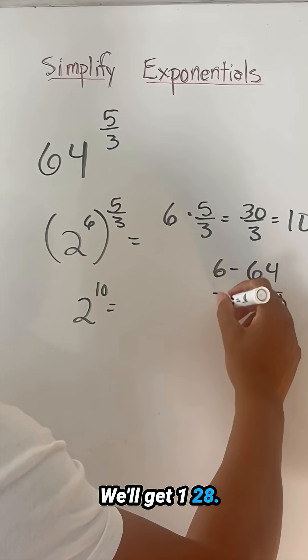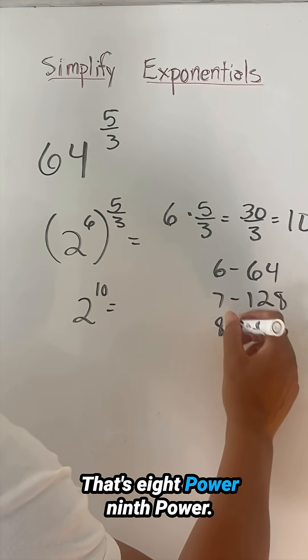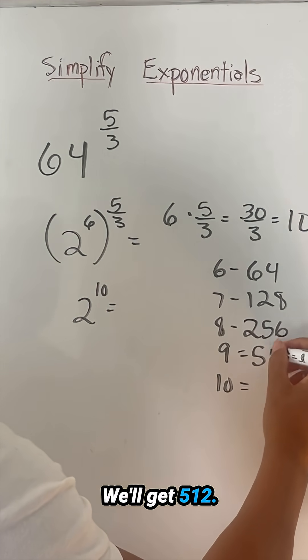We'll double it, we'll get 128. We'll double it again, we'll get 256. That's eighth power, ninth power, tenth power. So we'll double it again, we'll get 512.